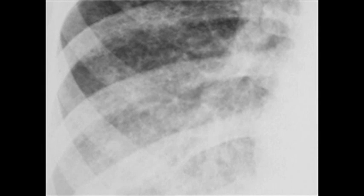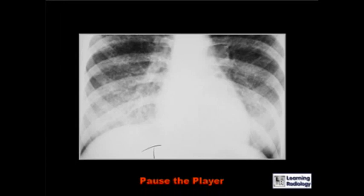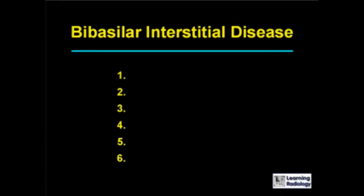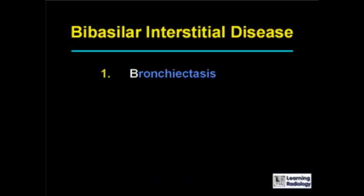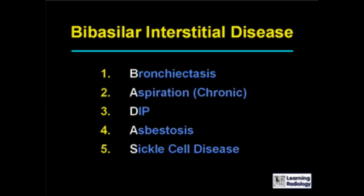The next differential diagnosis is for bibasilar interstitial disease. There are six causes: bronchiectasis, chronic aspiration, desquamative interstitial pneumonia, asbestosis, sickle cell disease, and scleroderma.